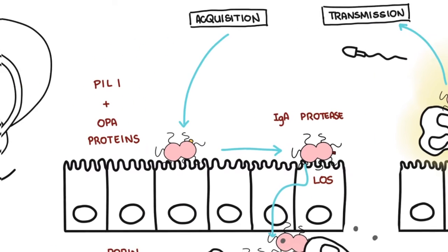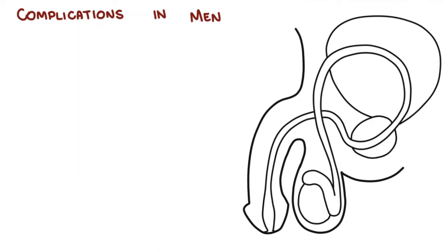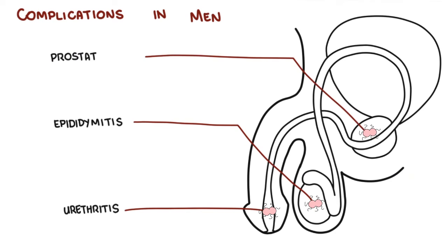Neisseria gonorrhea may ascend the urogenital tract and cause complications. So in men, Neisseria gonorrhea causes urethritis, epididymitis, and prostatitis.